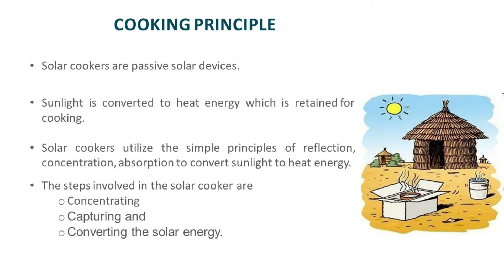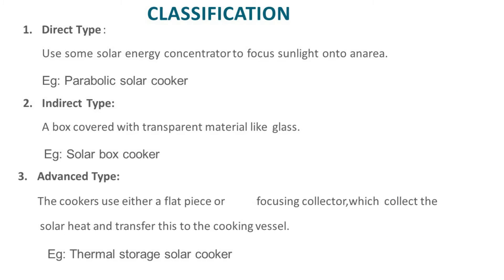The cooking principle of a solar cooker is as follows: sunlight is converted to heat energy which is retained for cooking. The steps involved are concentration, capturing, and converting into solar energy. The classification of cookers includes three types. The first is the direct type, which uses a solar energy concentrator to focus sunlight into an area.